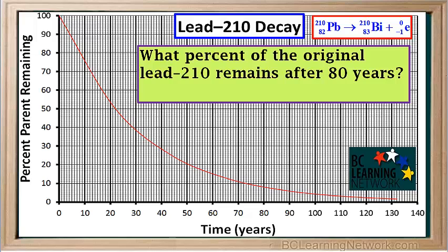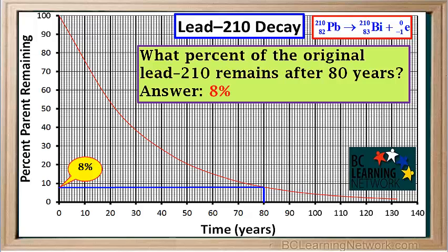Here's another question: what percent of the original lead-210 remains after 80 years? We start by drawing a line from 80 years on the time-axis up to the curve, then draw a line from that point over to the y-axis. The line hits the axis at 8%. So 8% of the original lead-210 remains after 80 years.